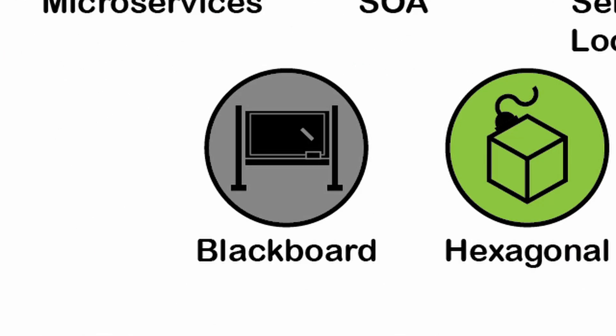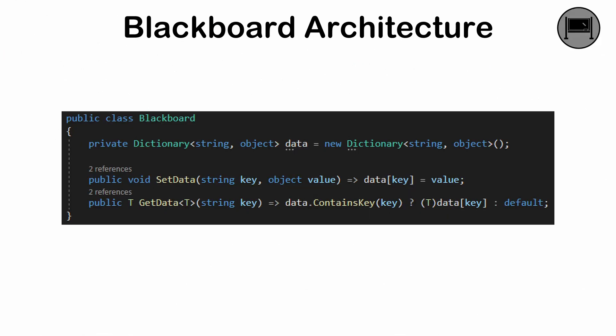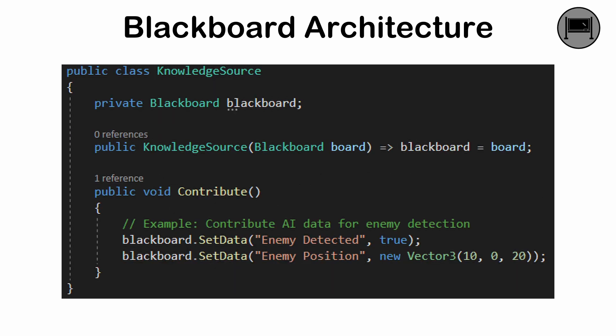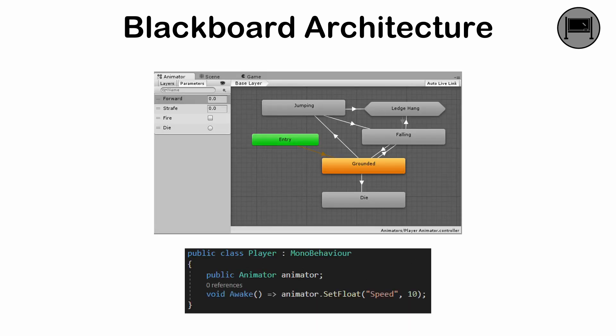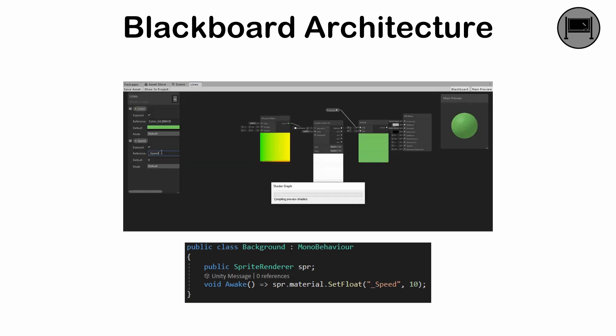Blackboard architecture. An organizational structure used to solve complex problems that have no straightforward algorithmic solution. It relies on multiple components contributing incremental solutions to a central shared data structure called the blackboard, which acts as a global repository for problem solving. A software inspector or node-based window can serve as a means of intuitively representing the blackboard pattern, where the underlying collection or graph is itself the blackboard.